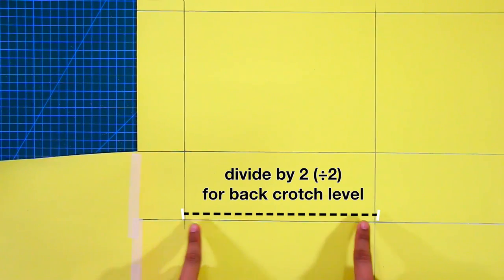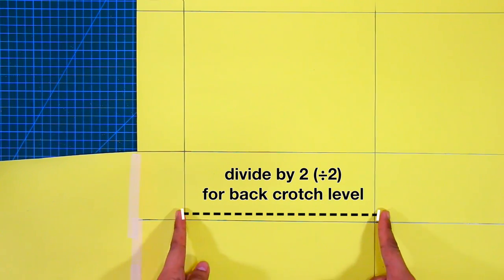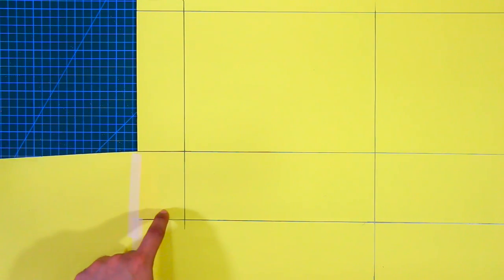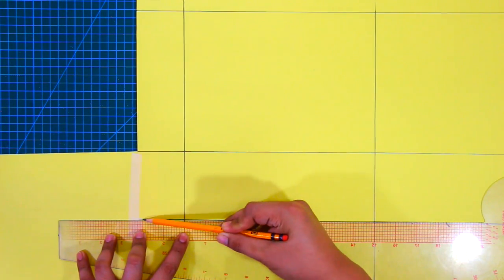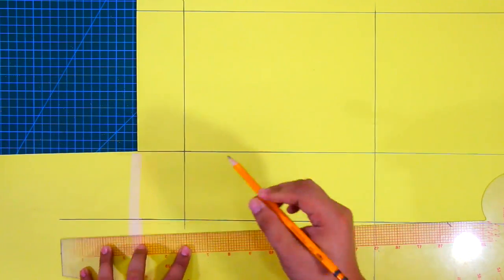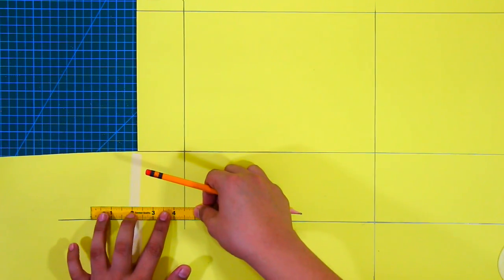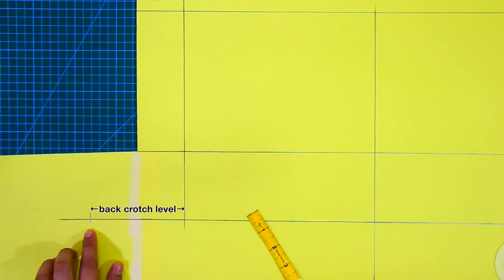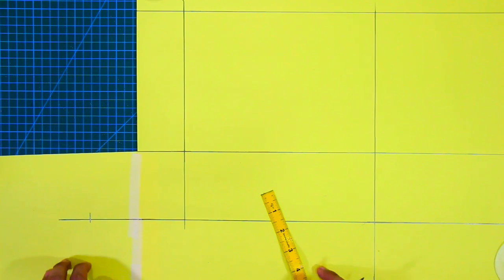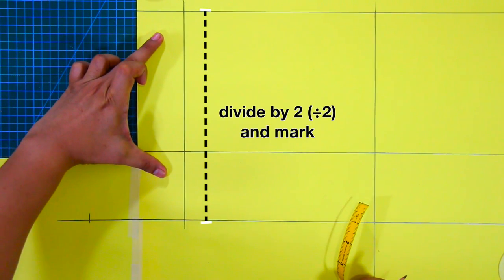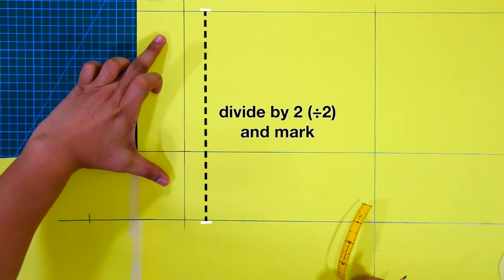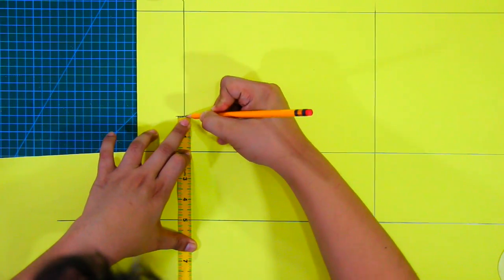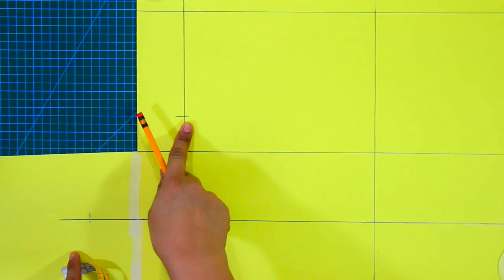Next, divide the width of the back crotch depth line by two — the result is for the back crotch level. Extend the crotch depth line and mark in the result from the center back line. Next, divide the waistline-to-crotch-depth measurement by two and mark it from the crotch depth line. We will use this mark later.